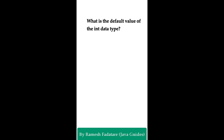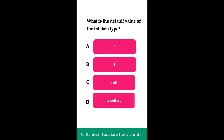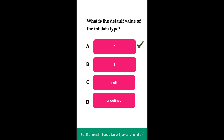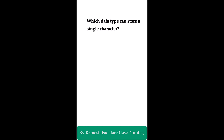What is the default value of the int data type? Option A: zero. Option B: one. Option C: null. Option D: undefined. The correct answer is zero. In Java, the default value of int is zero. This is automatically assigned to an int variable declared as a class member or instance variable that is not explicitly initialized. However, local variables in methods must be explicitly initialized before use — they do not receive a default value.